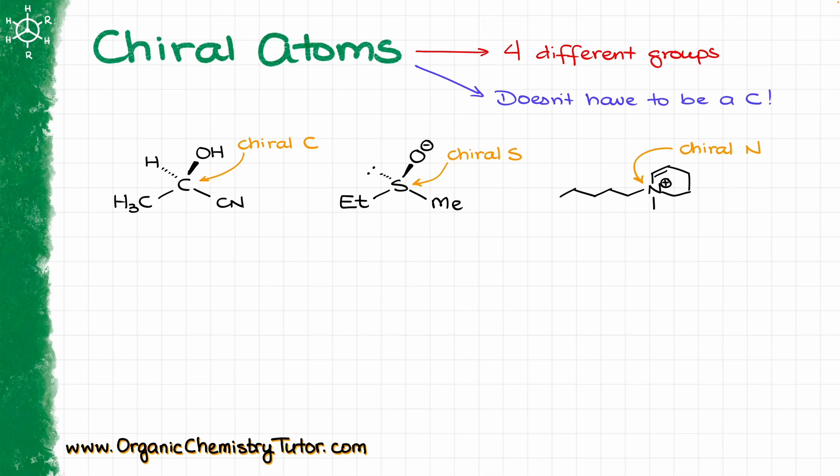Even in an introductory organic chemistry course, we can see chiral nitrogens, phosphorus, sulfurs, and many other examples. Of course, carbons are going to be our common targets here.